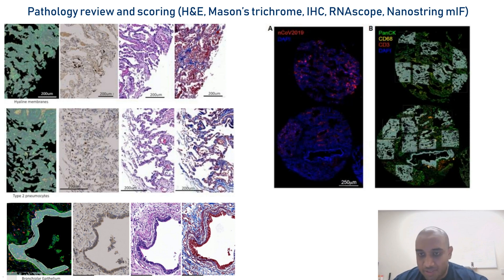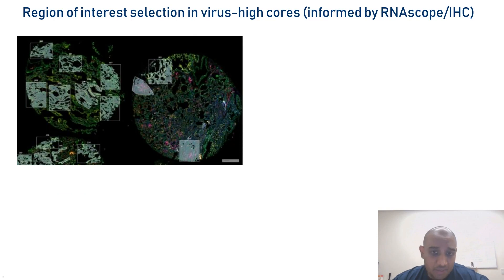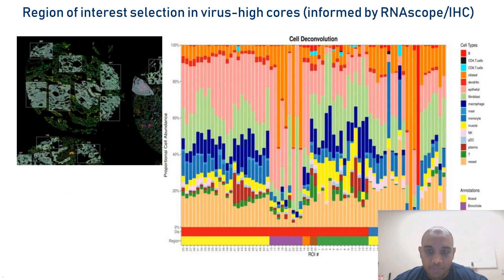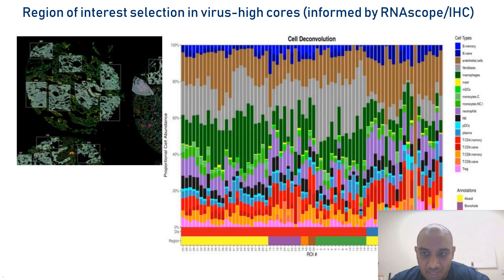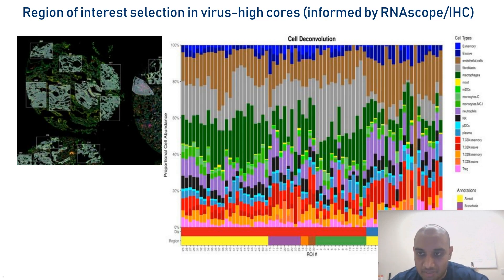Looking at those lung tissue samples, we're able to identify the majority cell types by defining regions of interest — the hyaline membranes, type 2 pneumocytes, and bronchioepithelial cells. This approach is similar to laser capture microdissection: you can shadow over the bronchioepithelial layer and liberate transcript or protein data straight off that using the tiny mirrors and UV light. Now toggling through, looking at the virus in red — these are representative regions of interest within that tissue.